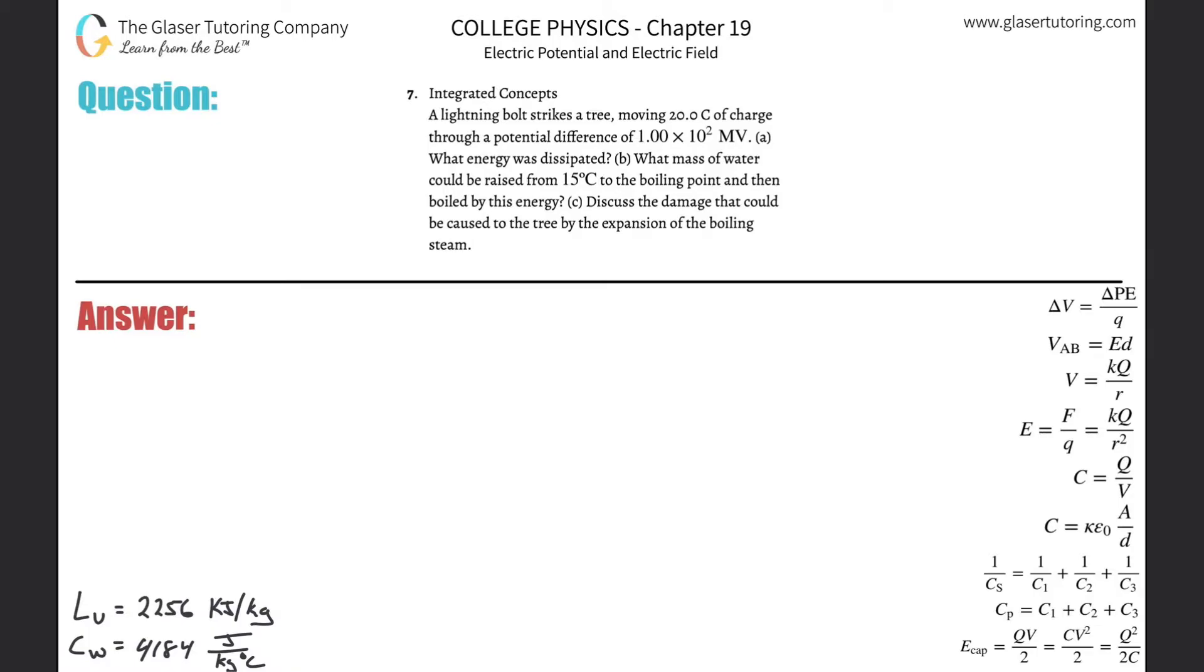Number seven, integrated concepts: A lightning bolt strikes a tree, moving 20 coulombs of charge through a potential difference of 1 times 10 to the second megavolts. Letter A: What energy was dissipated? Alright, so basically we need to